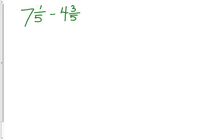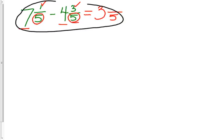OK friends, let's try this subtraction problem: 7 and 1 fifth minus 4 and 3 fifths. I can do the same steps as before — look at my whole number first: 7 minus 4 is 3. Then my denominator: that's 5. Now my numerator: 1 minus 3. I cannot do 1 minus 3, so I have to backtrack. This is not going to work. We need to think of something else. I know I can rename when I subtract.